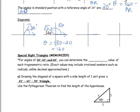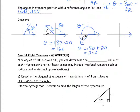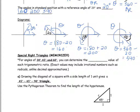Our third angle terminates in quadrant three. We know the reference angle is 20 degrees, so theta equals 180 plus 20, which is 200 degrees. The last angle terminates in quadrant four. The reference angle is 20 degrees, so theta equals 360 subtract 20, which equals 340 degrees. So those are our four angles in standard position that each have a reference angle of 20 degrees.